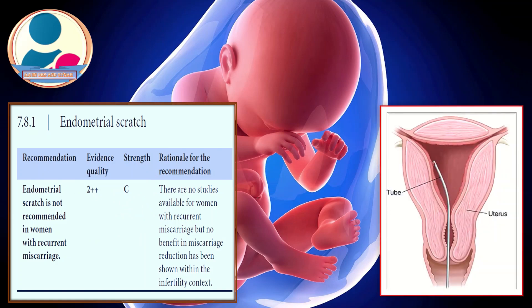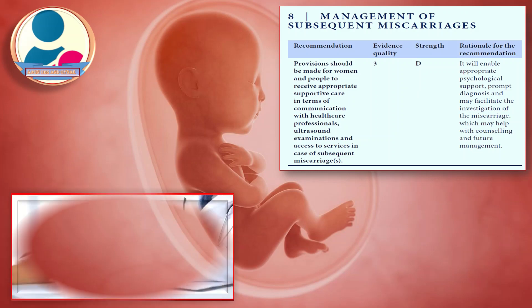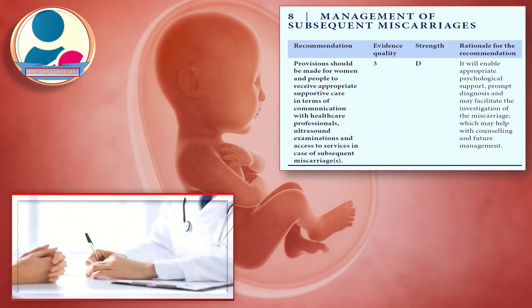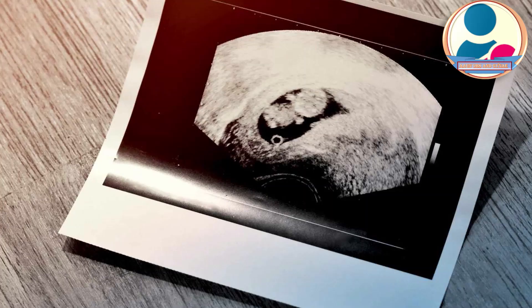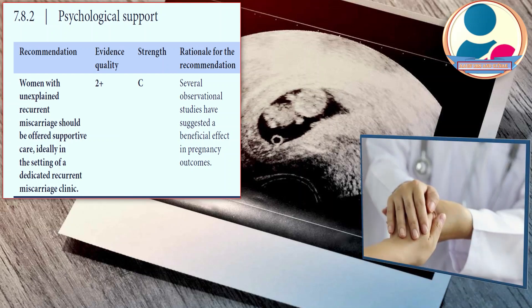Regarding management of subsequent miscarriages, provision should be made for women to receive appropriate supportive care including communication with healthcare professionals, ultrasound examination, and access to services. Women with unexplained recurrent miscarriages should be offered supportive care, ideally in the setting of a dedicated recurrent miscarriage clinic.